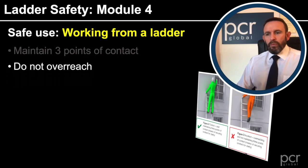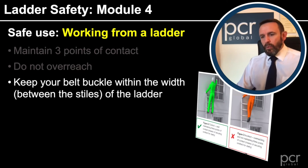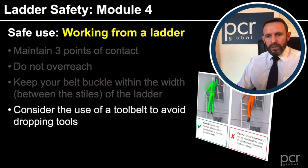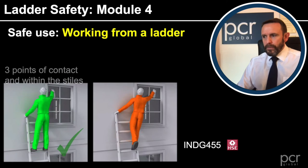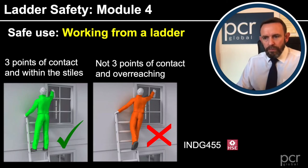Maintain three points of contact when working from a ladder. Do not overreach — if you have to overreach, come down and move the ladder. We should keep our belt buckles within the width of the ladder, between the stiles. Always consider the use of a tool belt to avoid dropping tools — if we can harness or lanyard them onto ourselves, that is good. We must have a sanitised area underneath the task location. Do not transfer from one ladder to another or try to move the ladder from above. In the photograph, the left-hand side with the tick shows three points of contact and the belt buckle within the stiles; on the right-hand side, there is overreaching and the belt buckle is outside the stiles — that is from INDG 455.